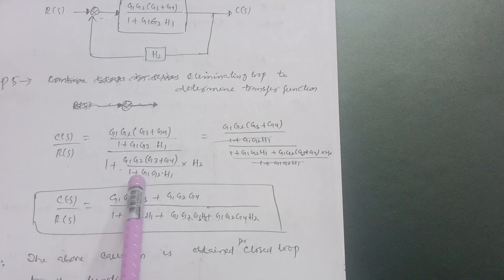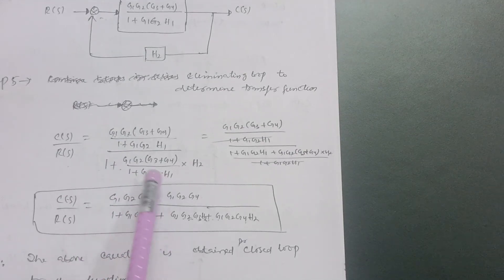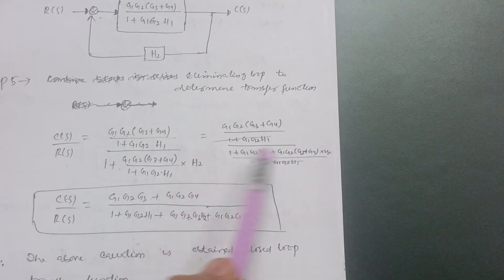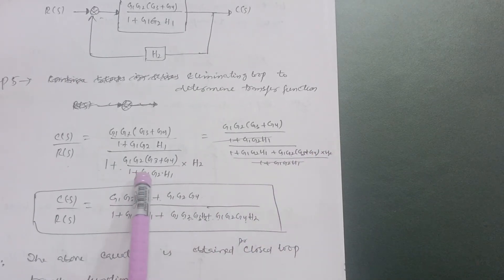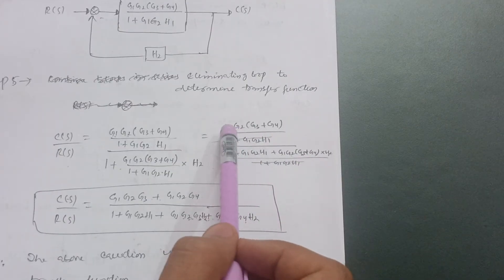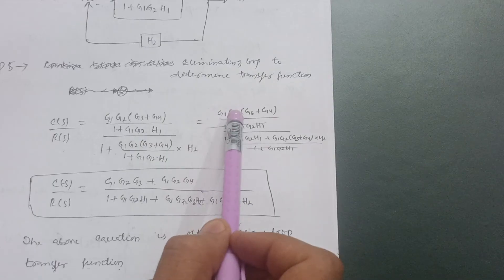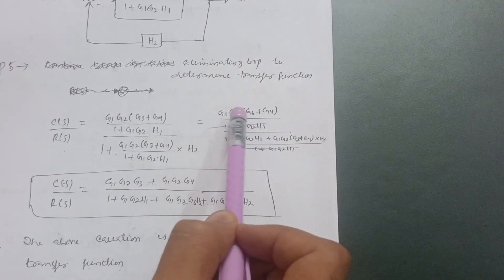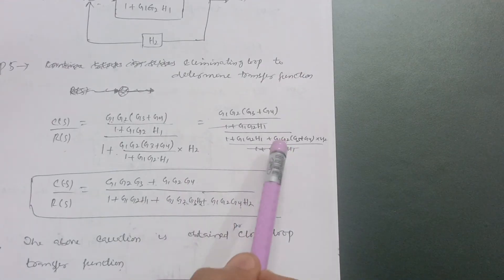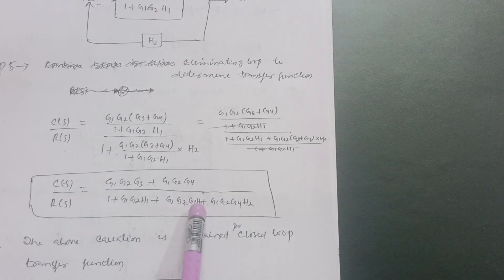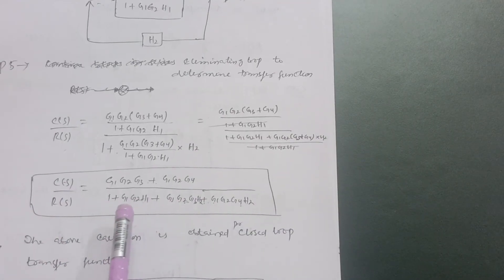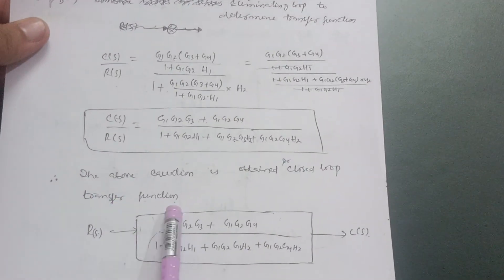Simplifying: the numerator is G1G2(G3+G4) as it is, over (1+G1G2·H1). The denominator cross-multiplies: 1·(1+G1G2·H1) plus G1G2(G3+G4)·H2, all divided by (1+G1G2·H1). The (1+G1G2·H1) terms cancel, leaving the final transfer function: G1G2(G3+G4) divided by (1 + G1G2·H1 + G1G2·G3·H2 + G1G2·G4·H2). This is the complete closed-loop transfer function.